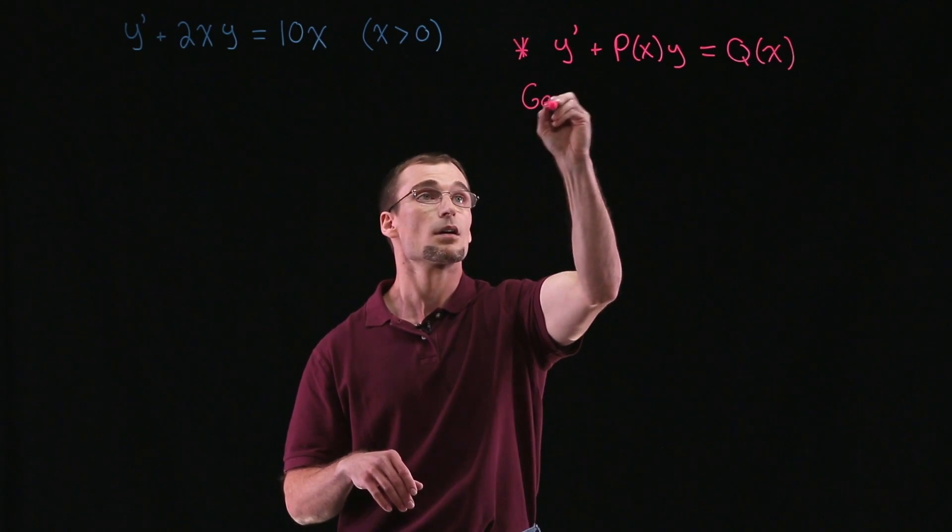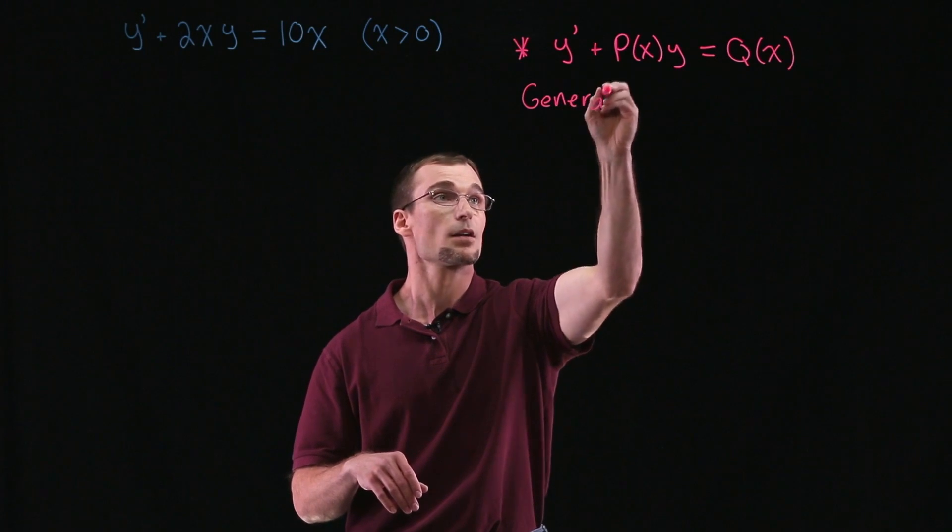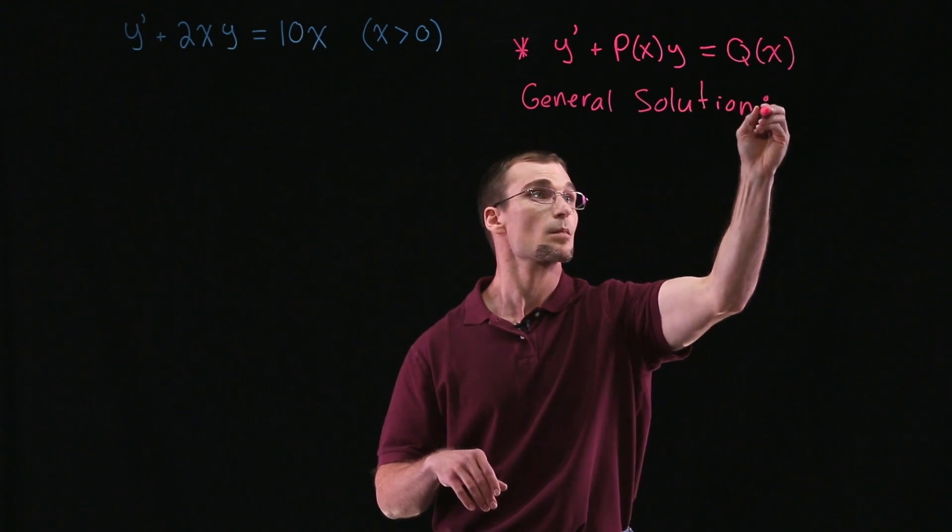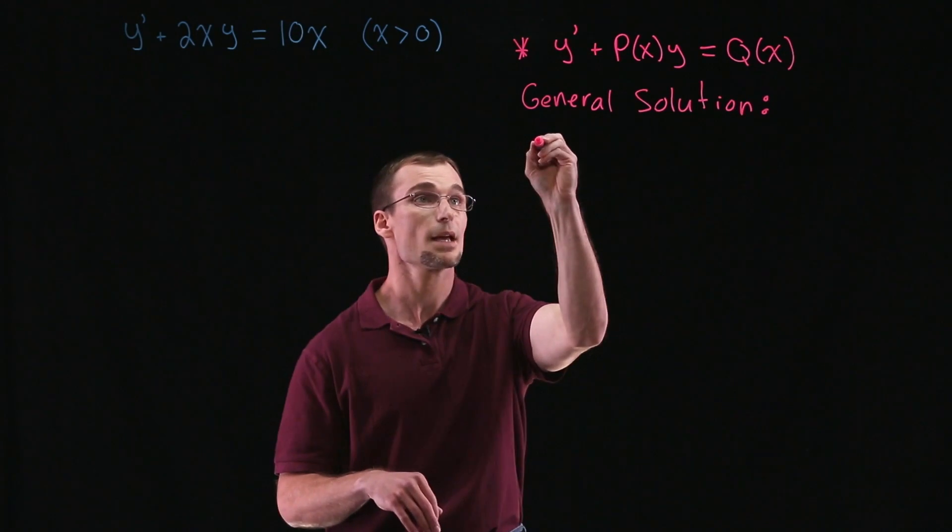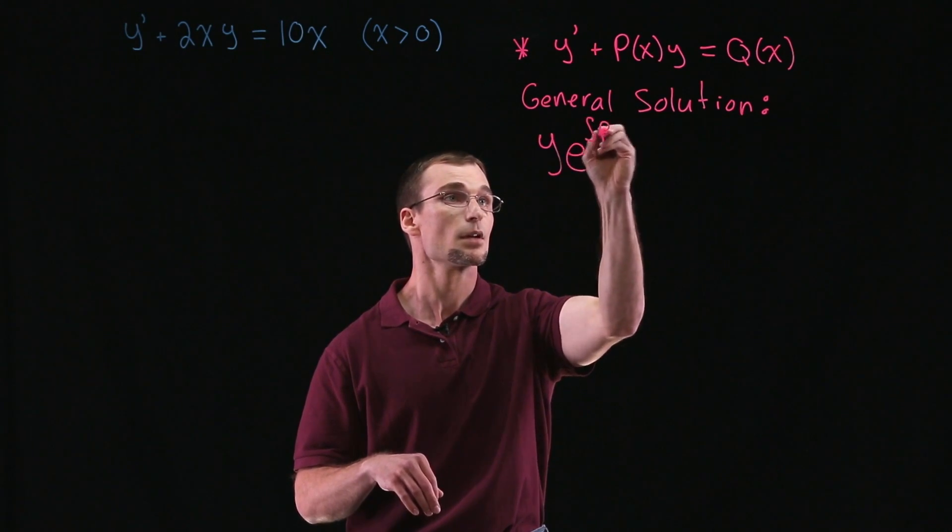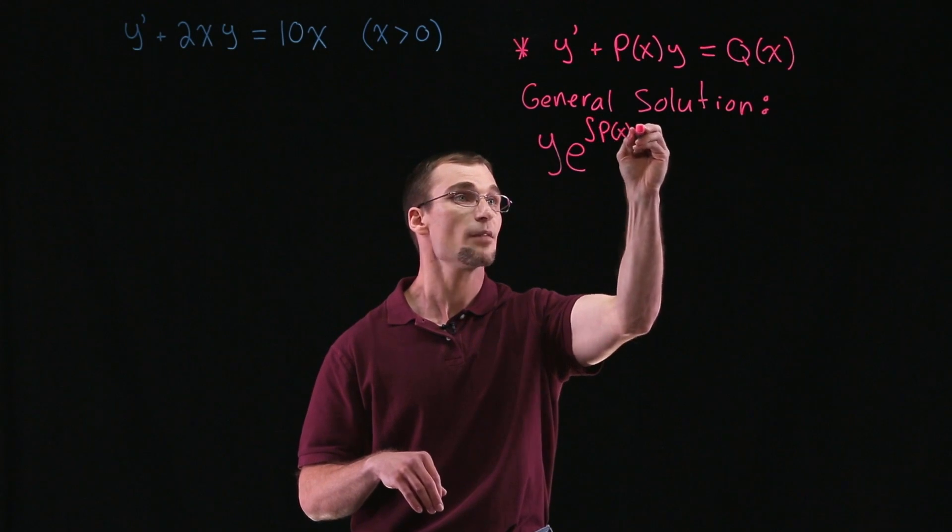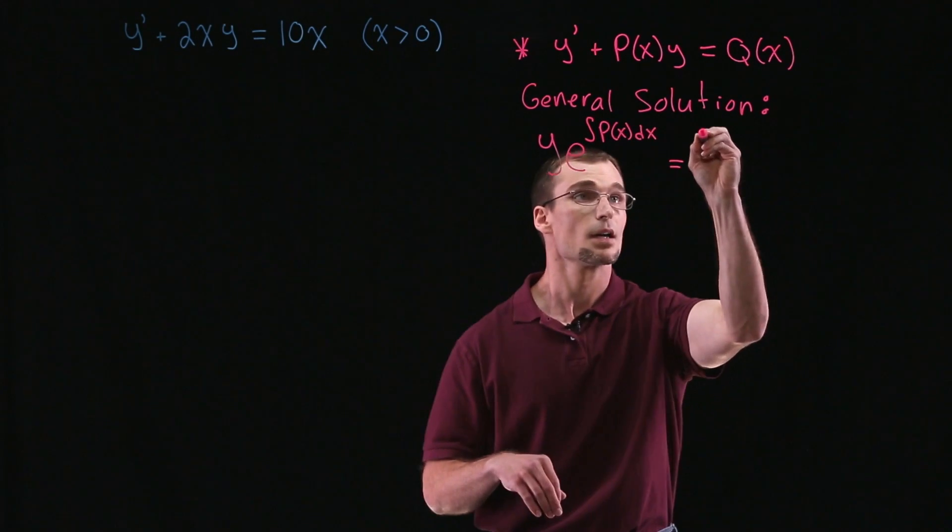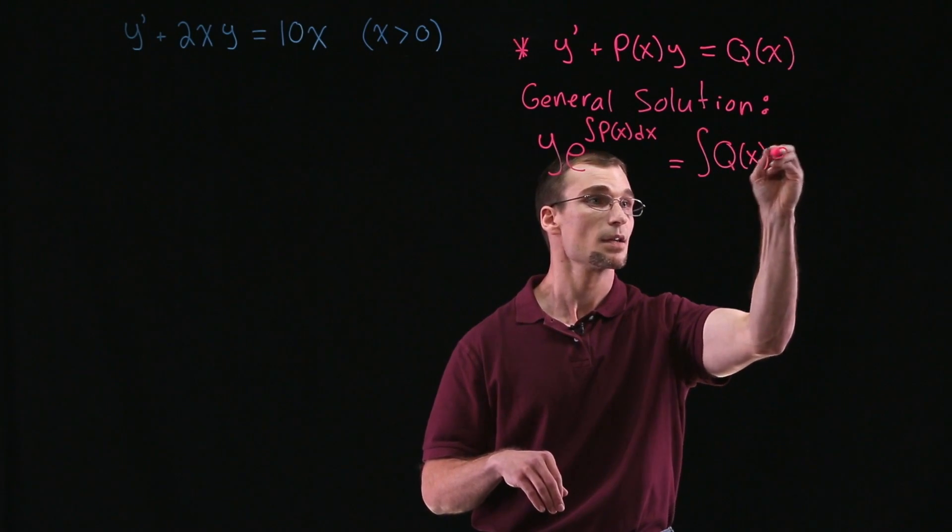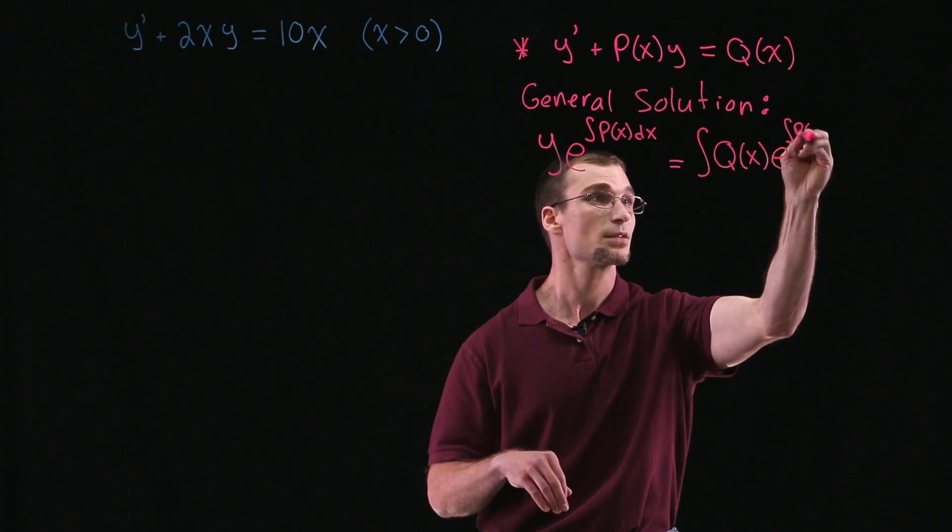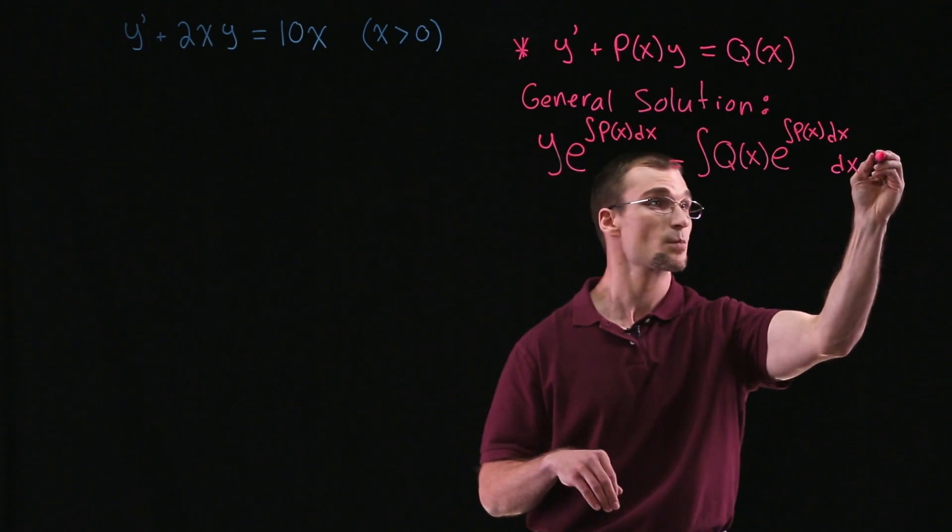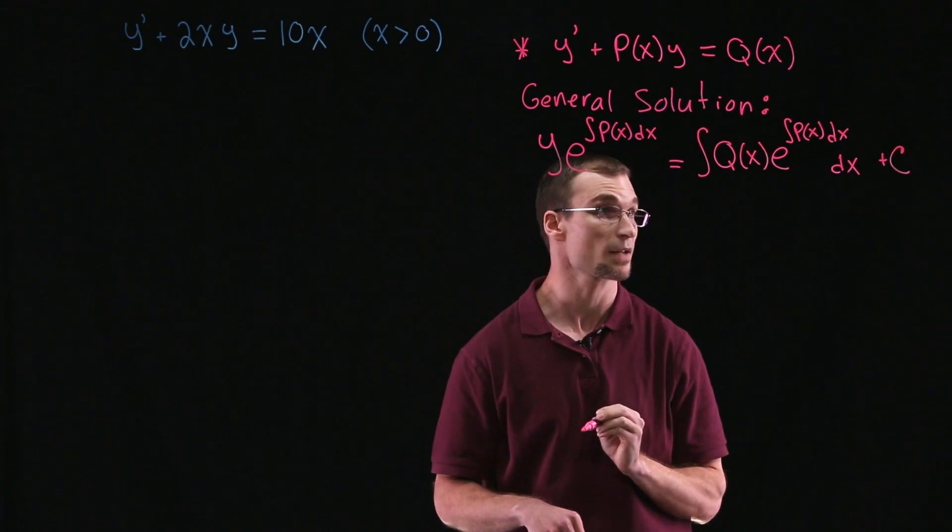And we know, or as seen in our section, that the general solution to this can be written as or found through y times e raised to the integral of P(x) dx. And that's equal to the integral of Q(x) times e to the integral of P(x) dx, and dx downstairs, and plus some general integration constant c.